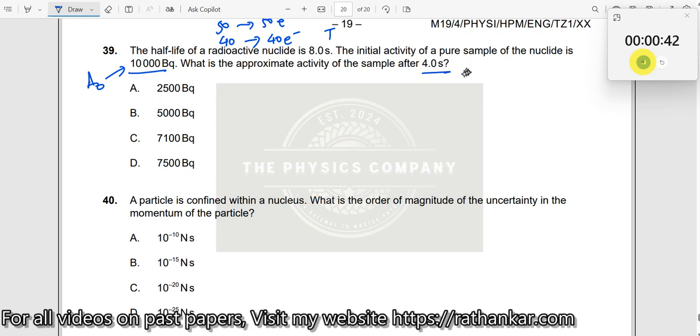What is the value after 4 seconds? T here. So what we know is A equals A0 e to the power of minus lambda T, right? And lambda is not given. How do I get the value of lambda?